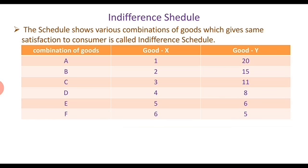In this schedule, there are combinations A, B, C, D, E, and F. In combination A, X good is 1 and Y goods are 20. In combination B, there are 2 X goods and 15 Y goods.